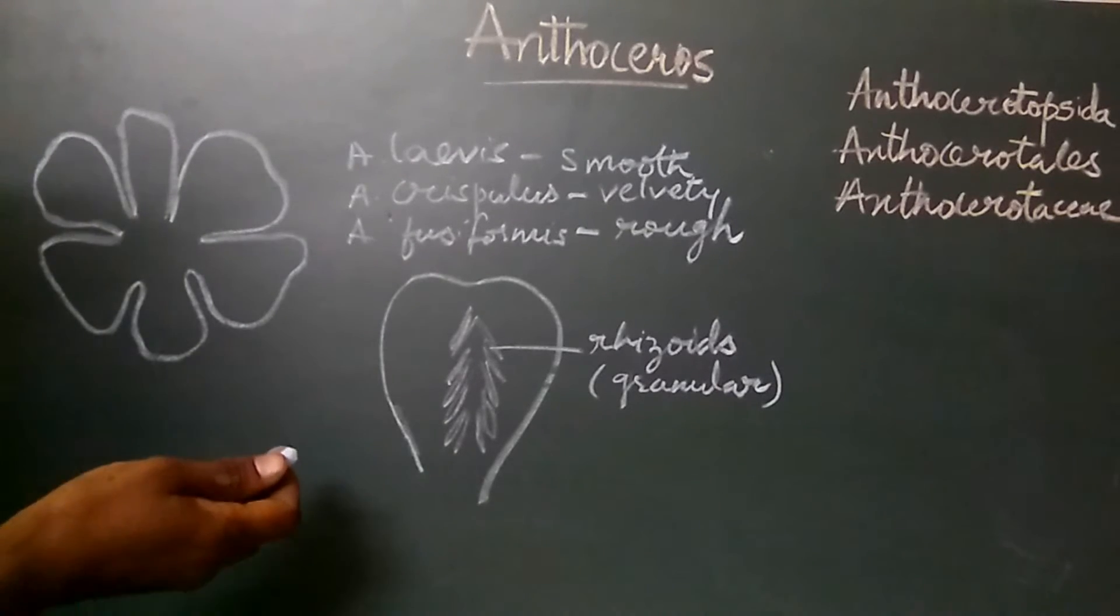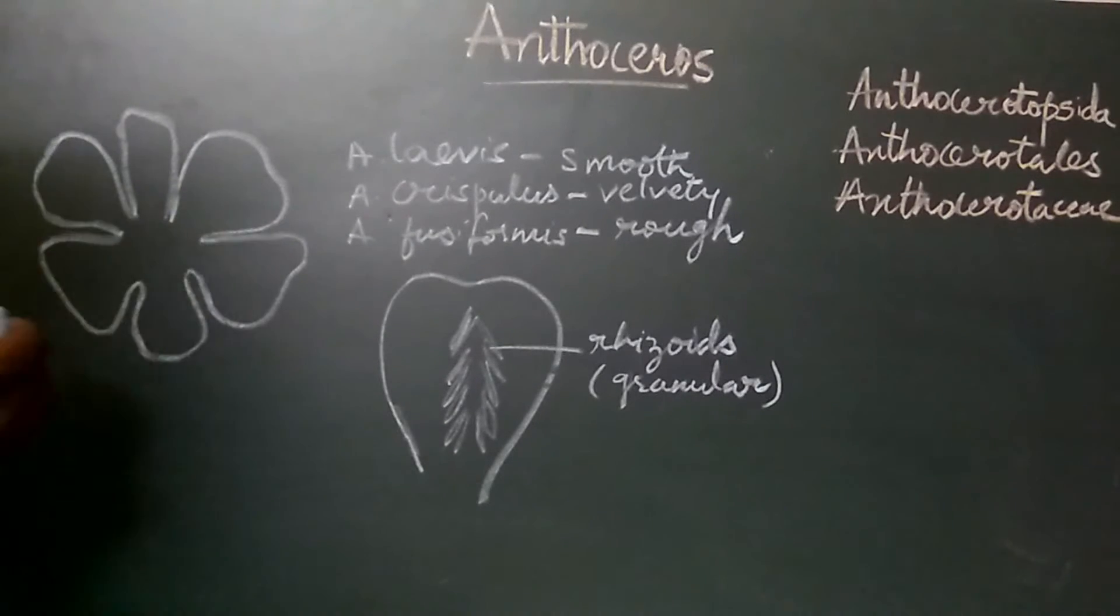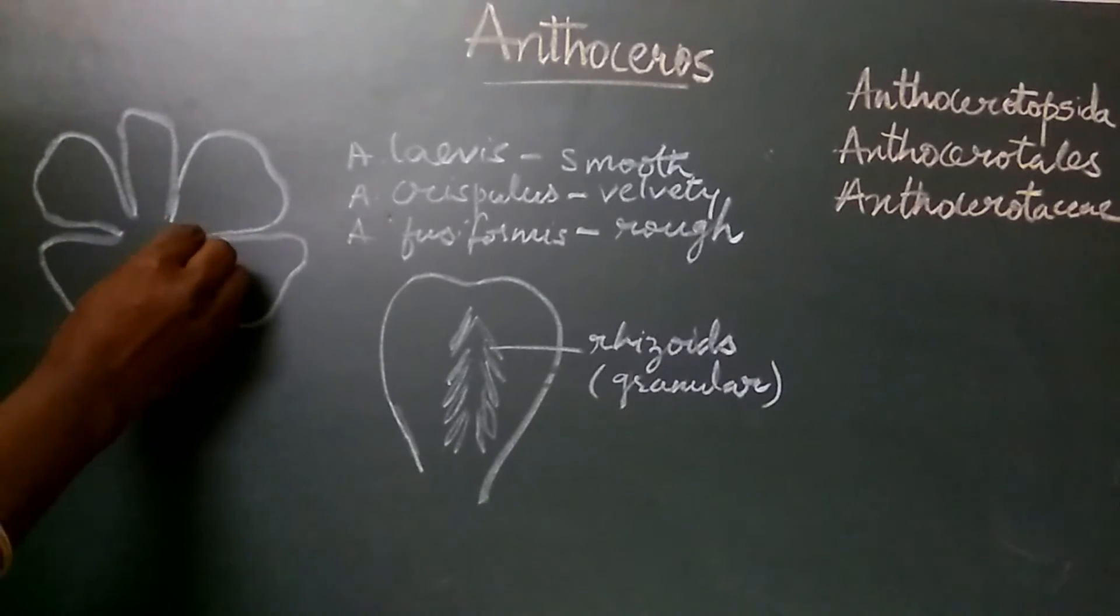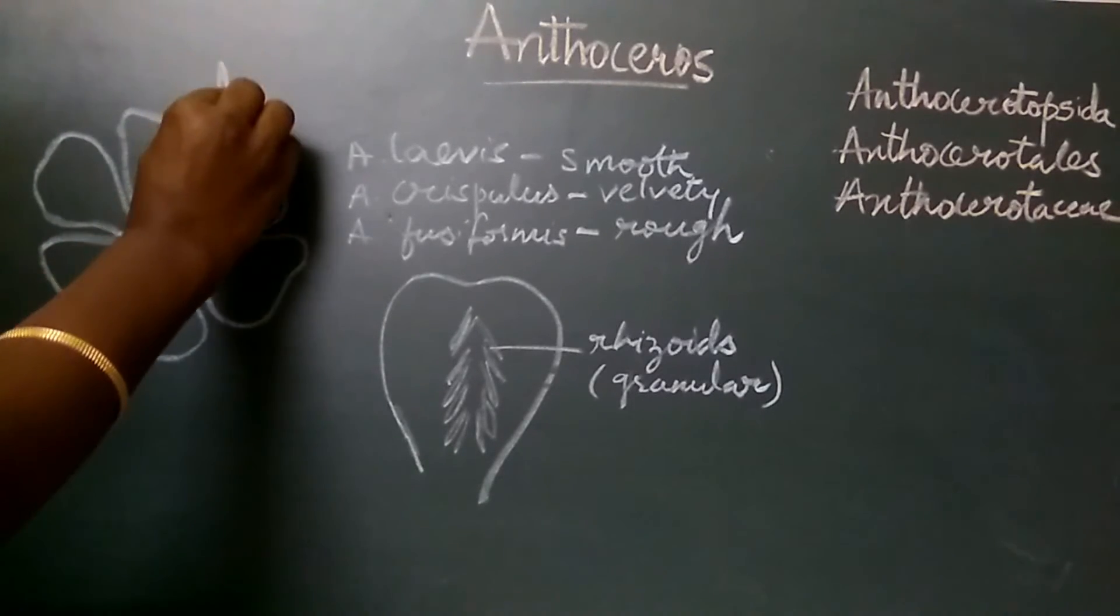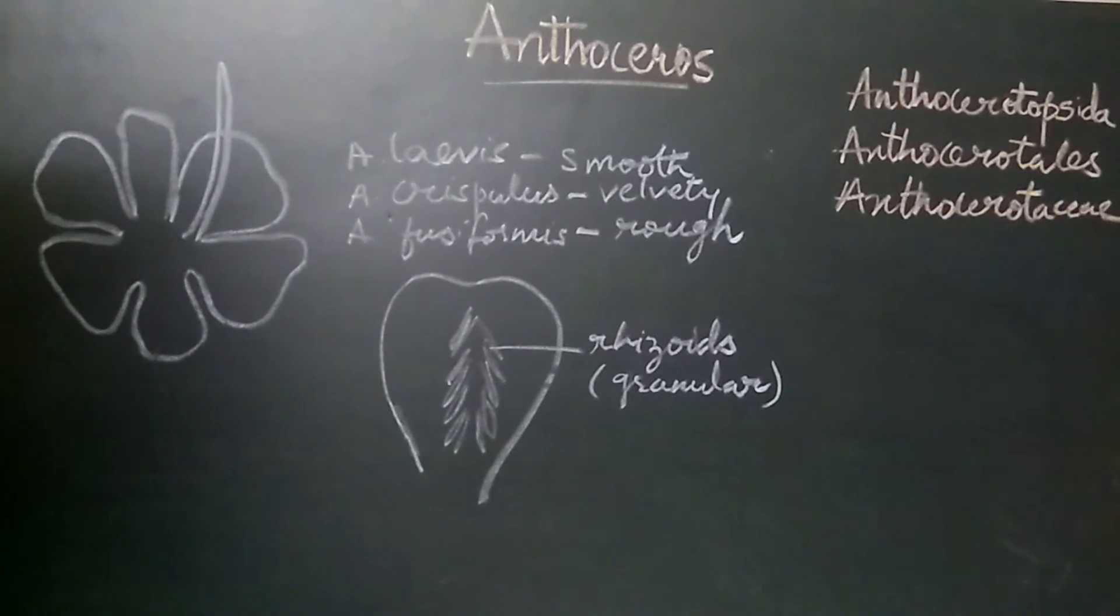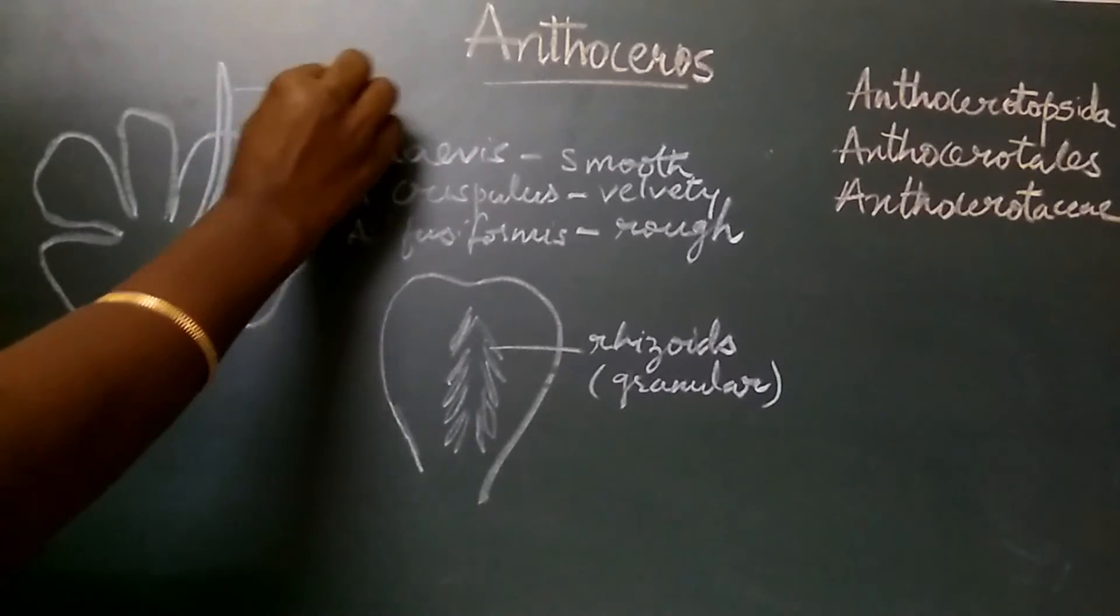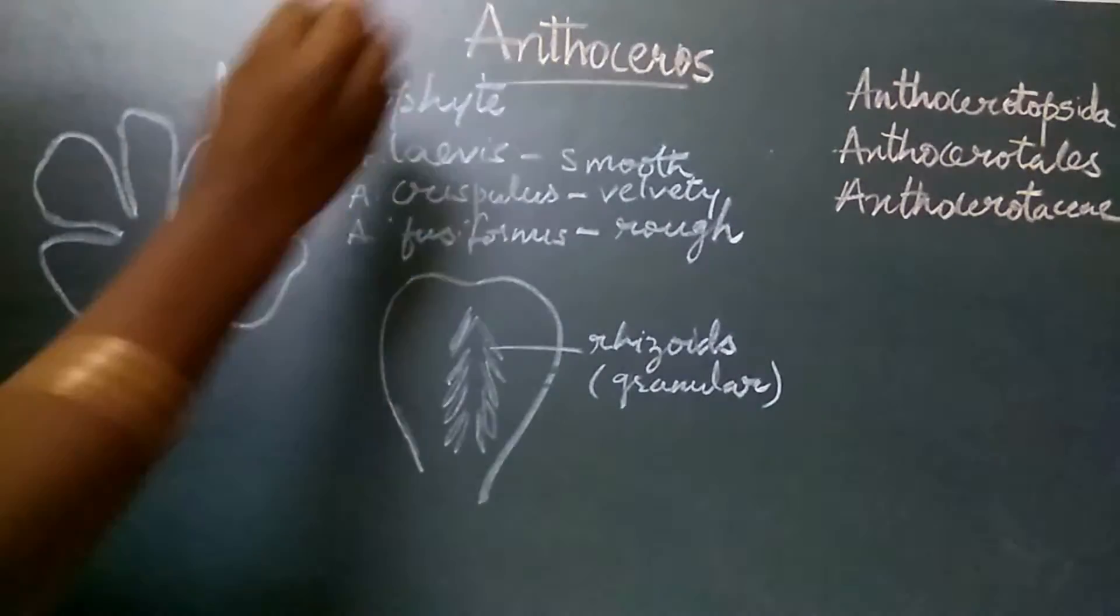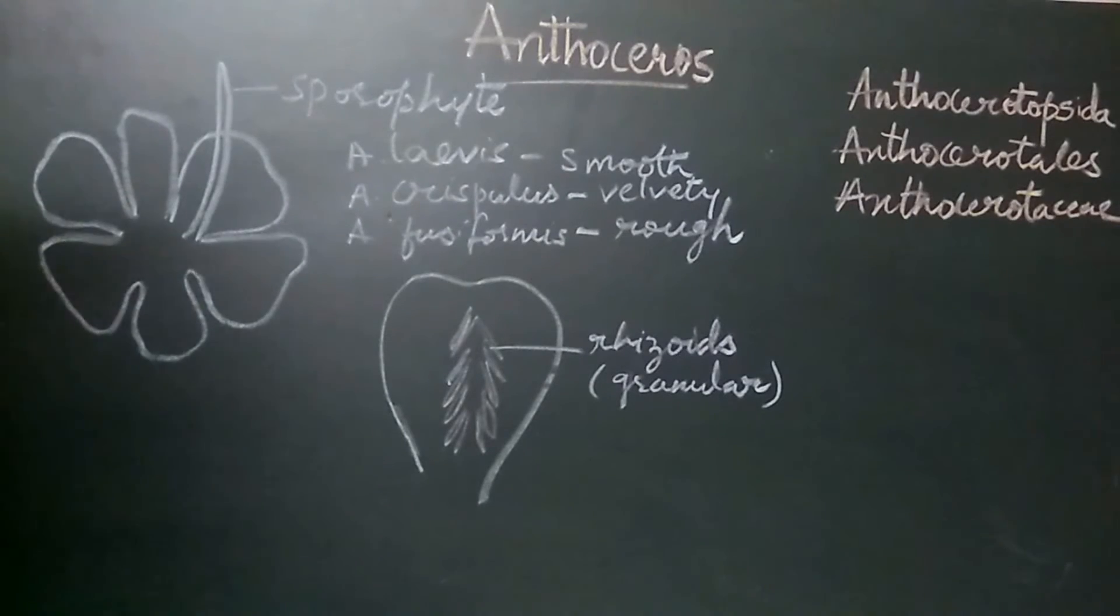The mature thallus shows, on the dorsal surface, the presence of erect, cylindrical, elongated structures. These are the sporophytes. The sporophyte develops from the dorsal surface of the thallus.